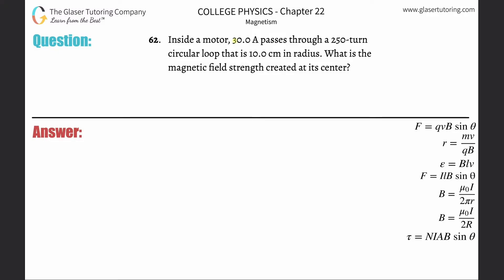Number 62: Inside a motor, 30 amps passes through a 250-turn circular loop that is 10 centimeters in radius. What is the magnetic field strength created at its center? We're going to use this formula here.